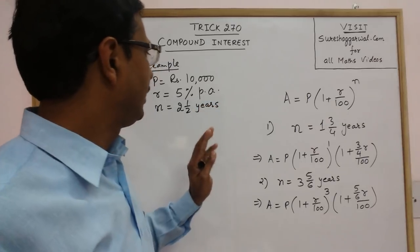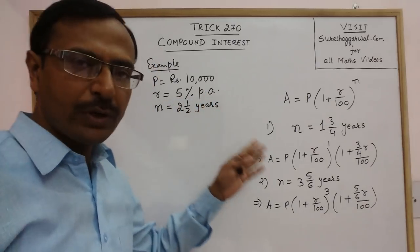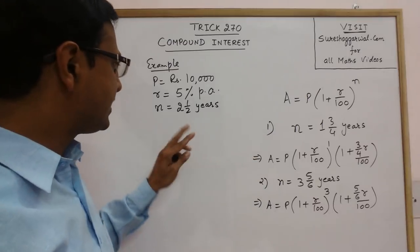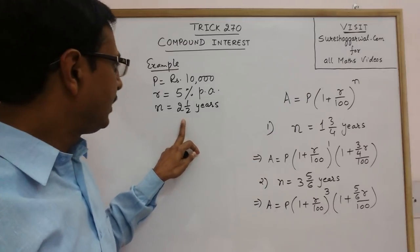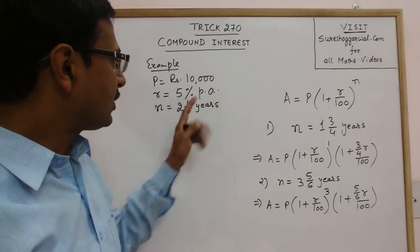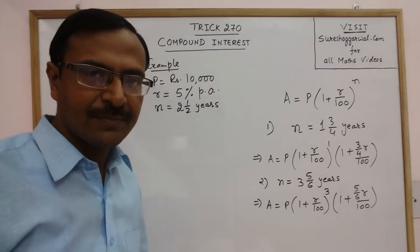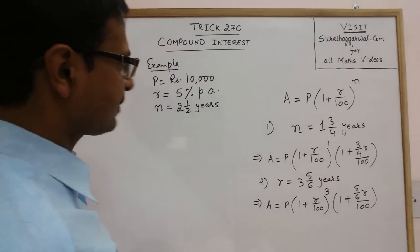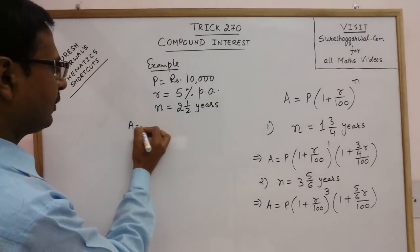Now I need to find, at 5% per annum compound interest, what will be the amount received by investing the amount of Rs 10,000 for 2.5 years. Now see, I will make use of this method, the amount will be found out by P.